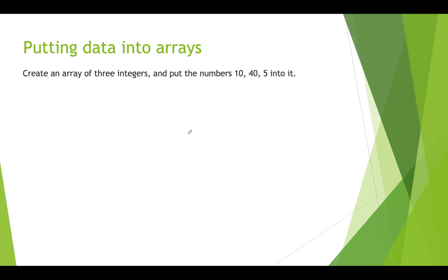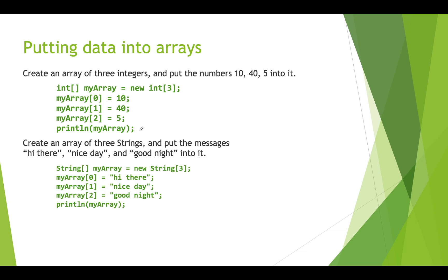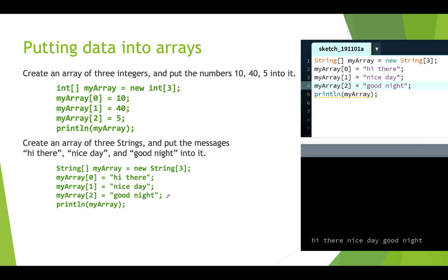To put data into arrays without literal creation: if you want an array of three integers with values 10, 40, and 5, you write int[] myArray = new int[3], then assign myArray[0] = 10, myArray[1] = 40, myArray[2] = 5, and print it out. Similarly for strings: String[] myArray with three slots, then assign 'hi there' to slot 0, 'nice day' to slot 1, and 'good night' to slot 2. When printed, you'll see exactly those values.